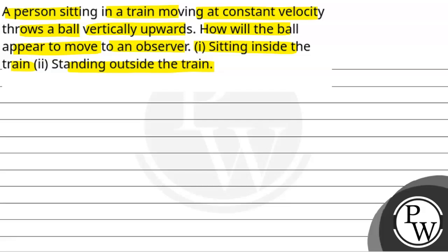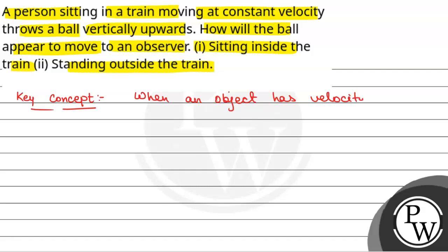We will solve this question. First of all, we will see what will be the key concept used to solve this question. The key concept is: when an object has velocity in both the x and y directions, the path is parabolic.